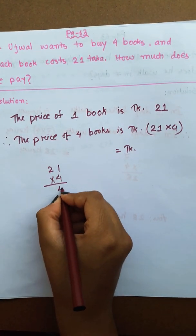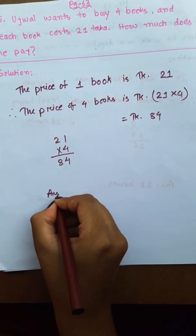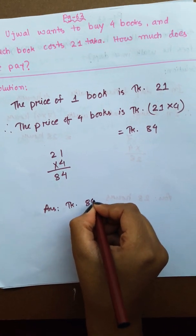4 ones are 4. 4 twos are 8, giving us 84. Therefore, answer is taka 84.